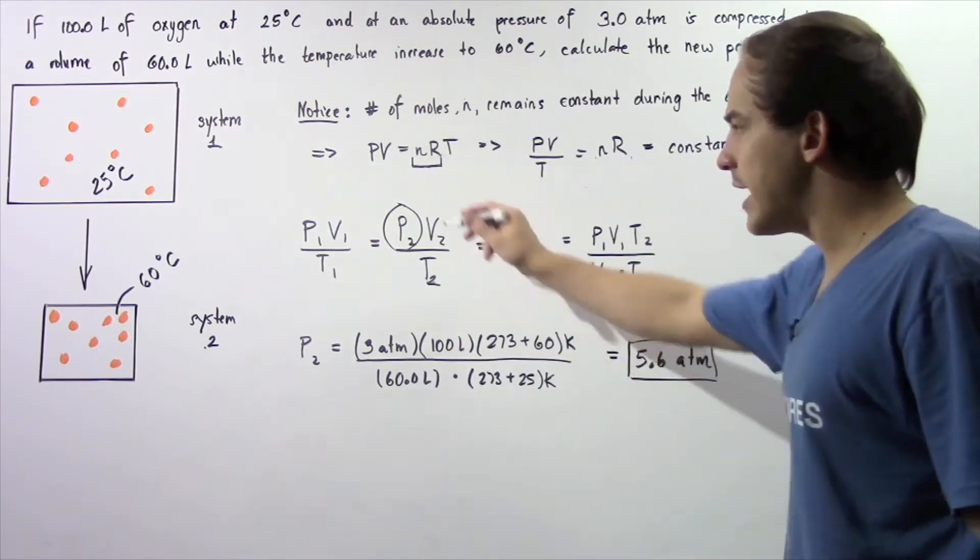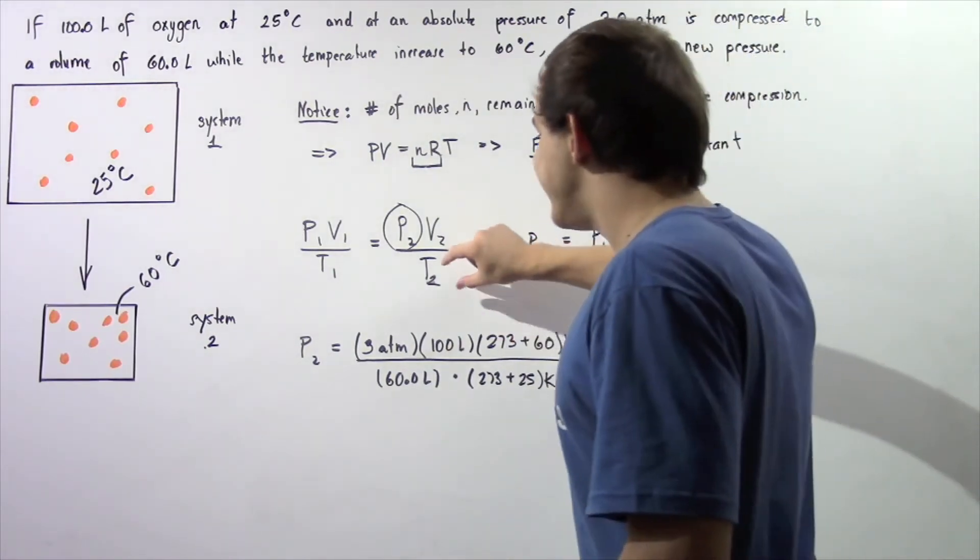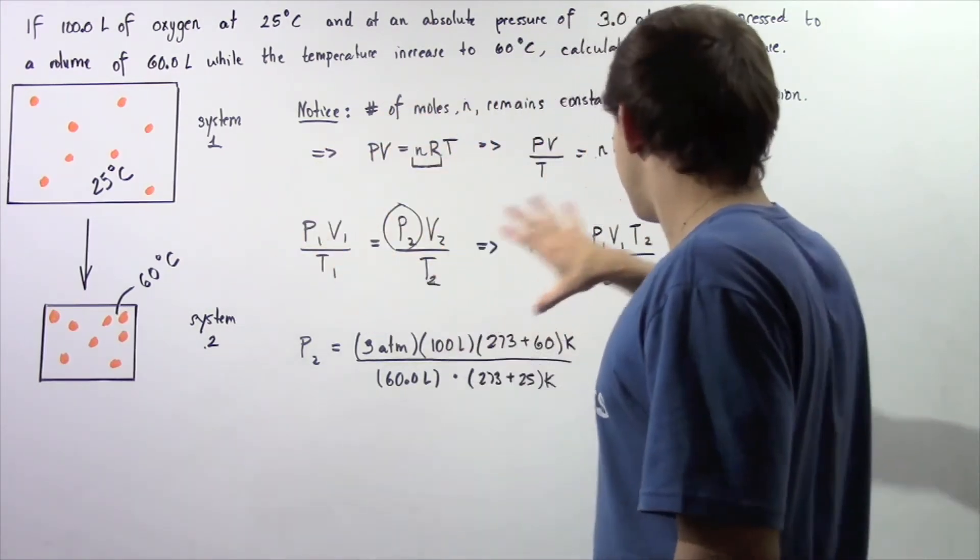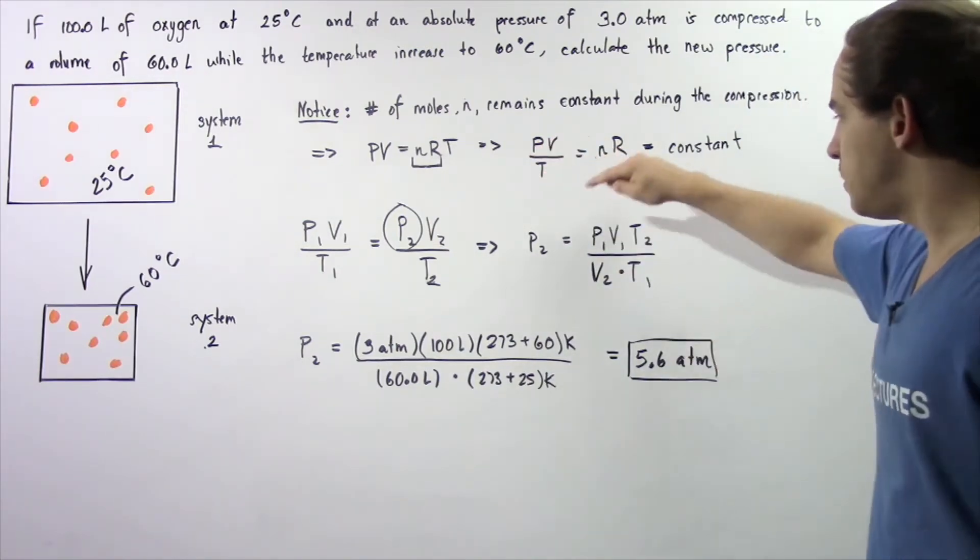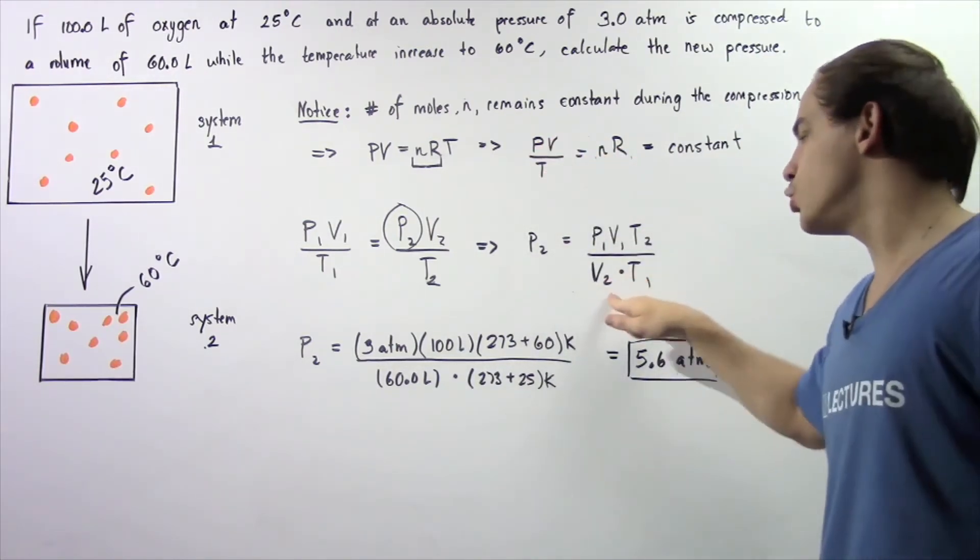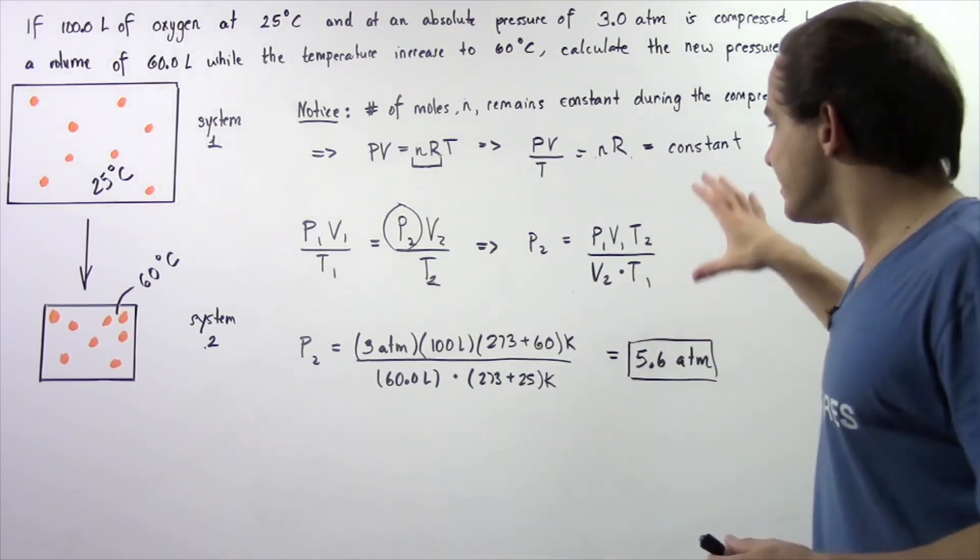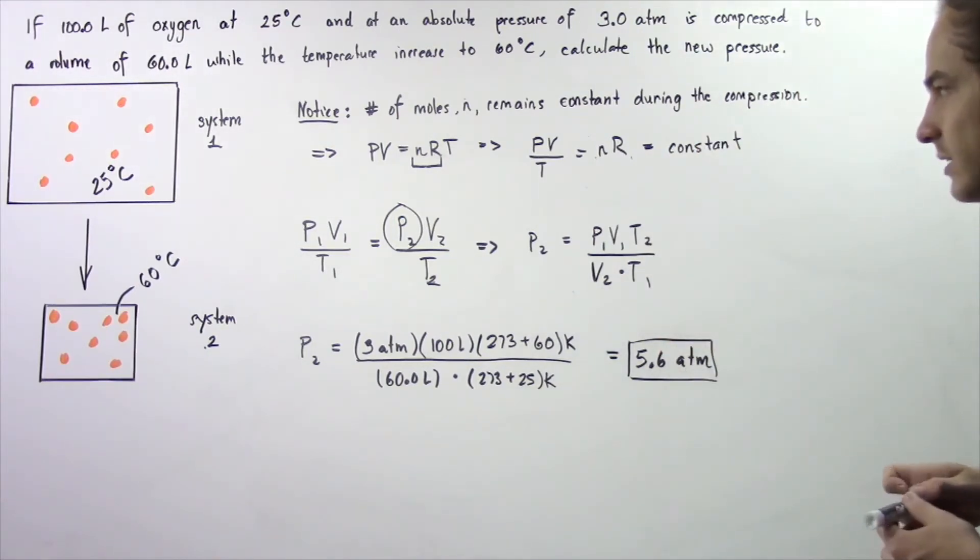We essentially want to rearrange this equation and solve for P2. So we bring T2 to the left and V2 to the left, and we get the following result: P2 is equal to P1 V1 T2 divided by V2 multiplied by T1. We want to determine all these values, then plug them into our calculator and find what P2 is.